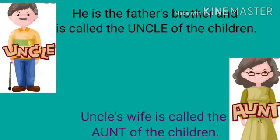On the left hand side you can see a picture of uncle and on the right hand side bottom you can see a picture of aunt. Uncle — he is the father's brother and is called the uncle of the children. Aunt — uncle's wife is called the aunt of the children.